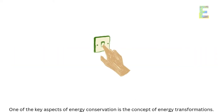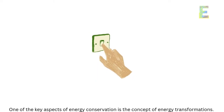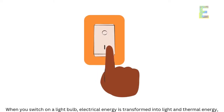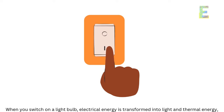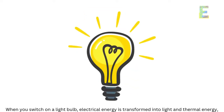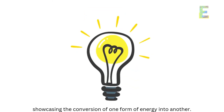One of the key aspects of energy conservation is the concept of energy transformations. When you switch on a light bulb, electrical energy is transformed into light and thermal energy, showcasing the conversion of one form of energy into another.